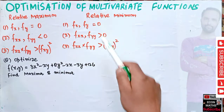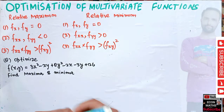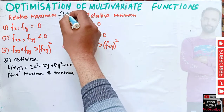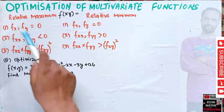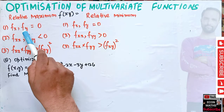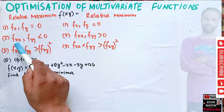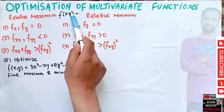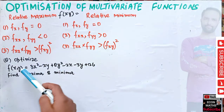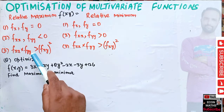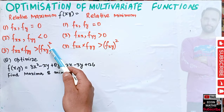What are the conditions for relative maximum or relative minimum in case of a multivariate function? If we have a function f(x, y), we first set the partial derivatives with respect to x and y equal to zero. Then we take the second-order direct partials. They should be less than zero in case of maximum, and the product of the second-order direct partials should be greater than the square of the cross partial.